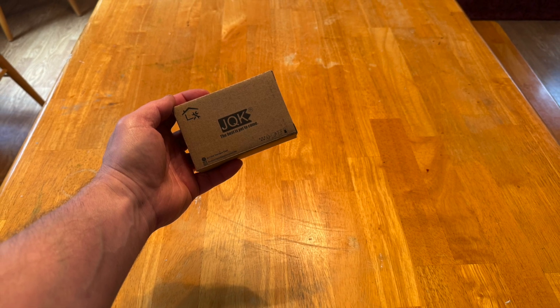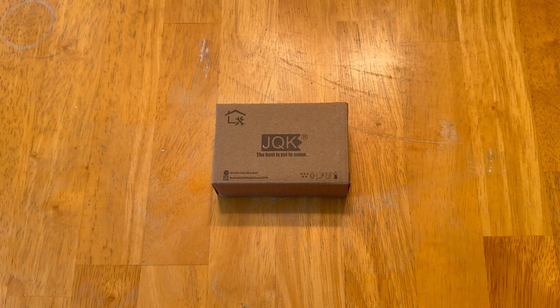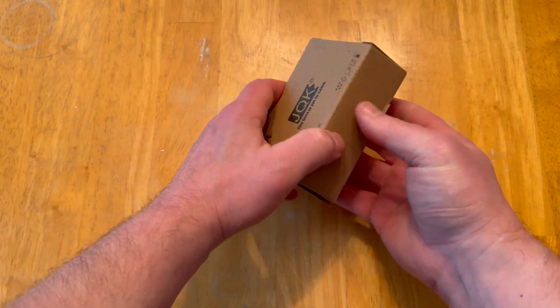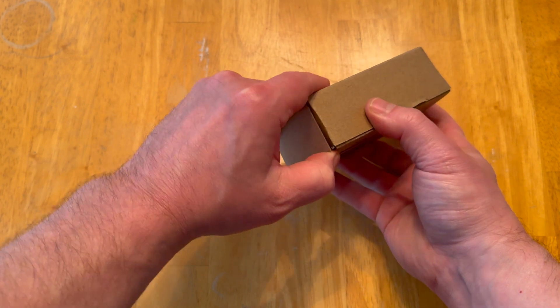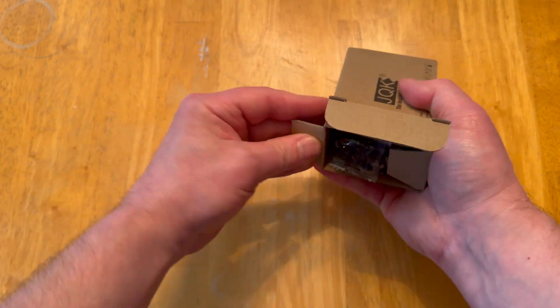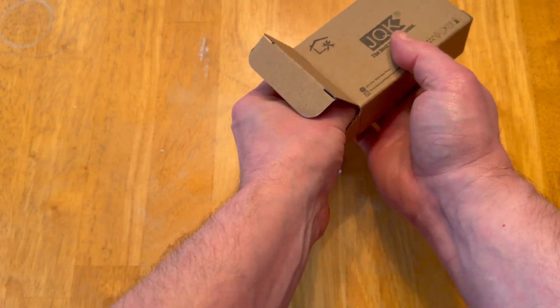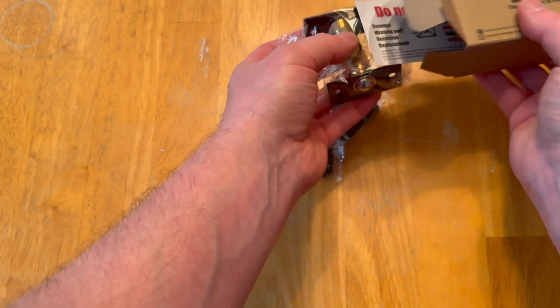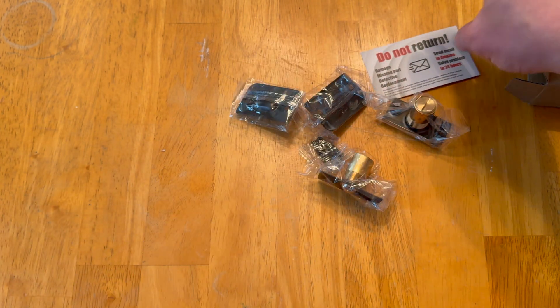I want to talk about this JQK ball catch door closer. I have a cabinet door in my kitchen and I had one of these that was installed by the manufacturer that popped out recently, literally just fell on the floor and scared the dog in the middle of the night. So I ordered this as a replacement.